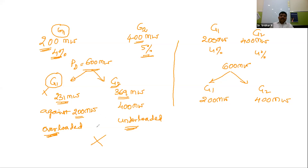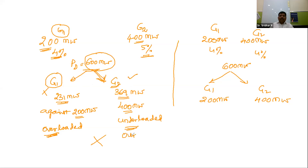An overloaded condition is not advisable. After a few minutes or hours, G1 may get damaged. If G1 is not isolated immediately when damaged, the entire 600 MW load falls on G2. But G2's capacity is only 400 MW, so it also becomes overloaded, potentially damaging the entire system.